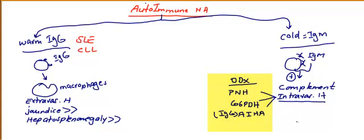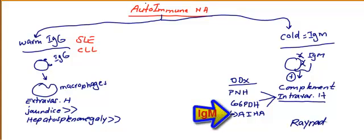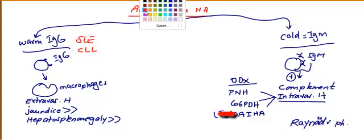The most characteristic clinical feature for cold IgM is Raynaud's phenomenon. You will not see jaundice and will not see hepatosplenomegaly like in the case of IgG type.